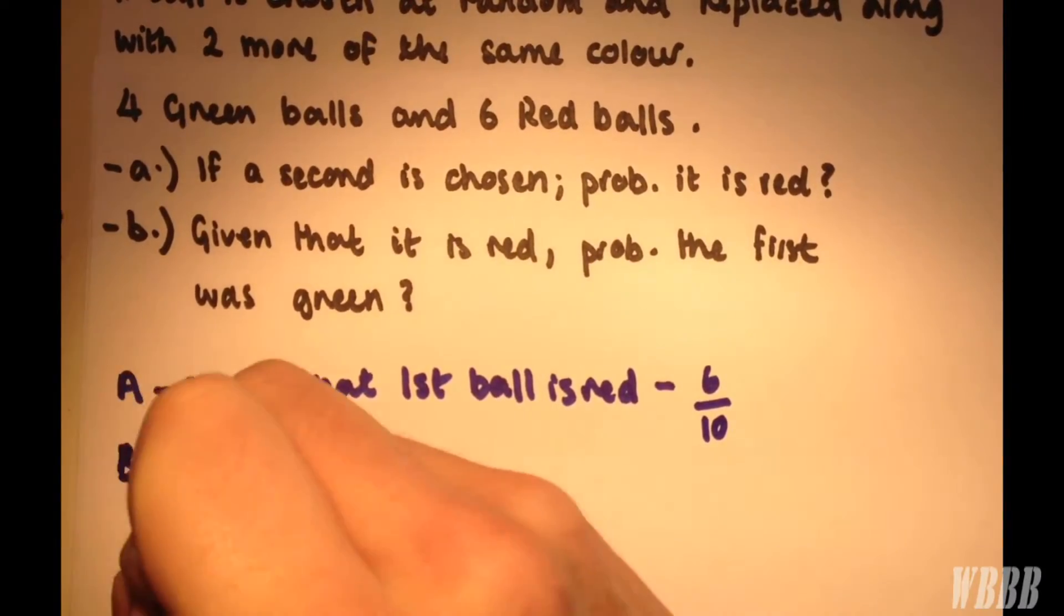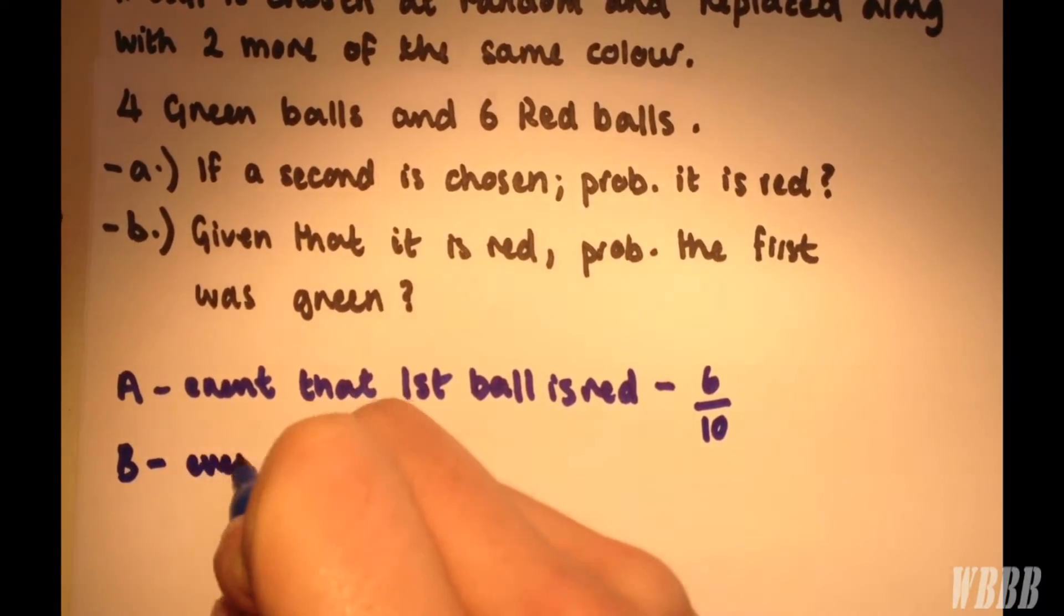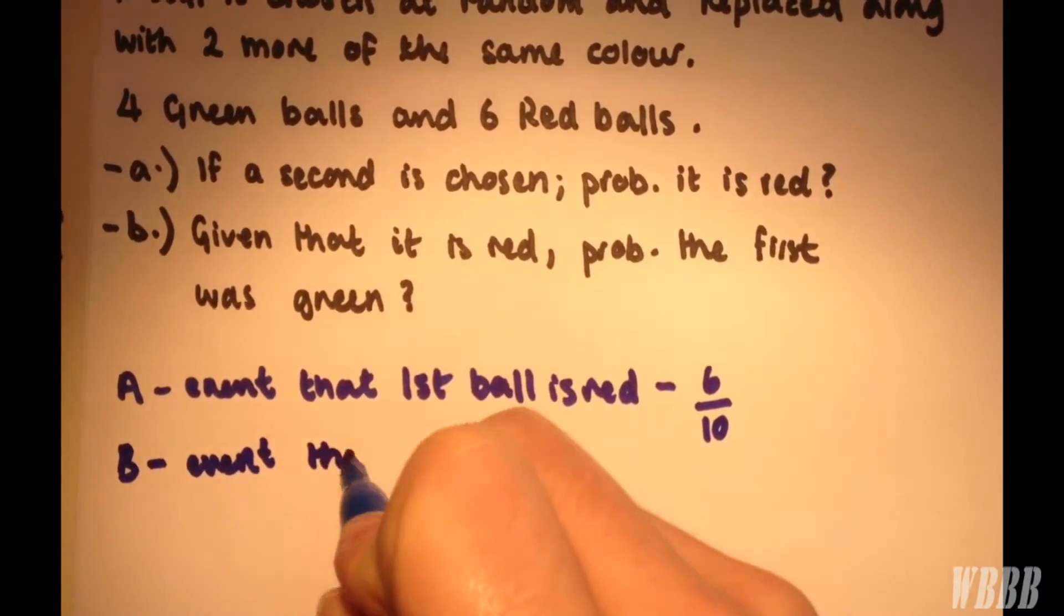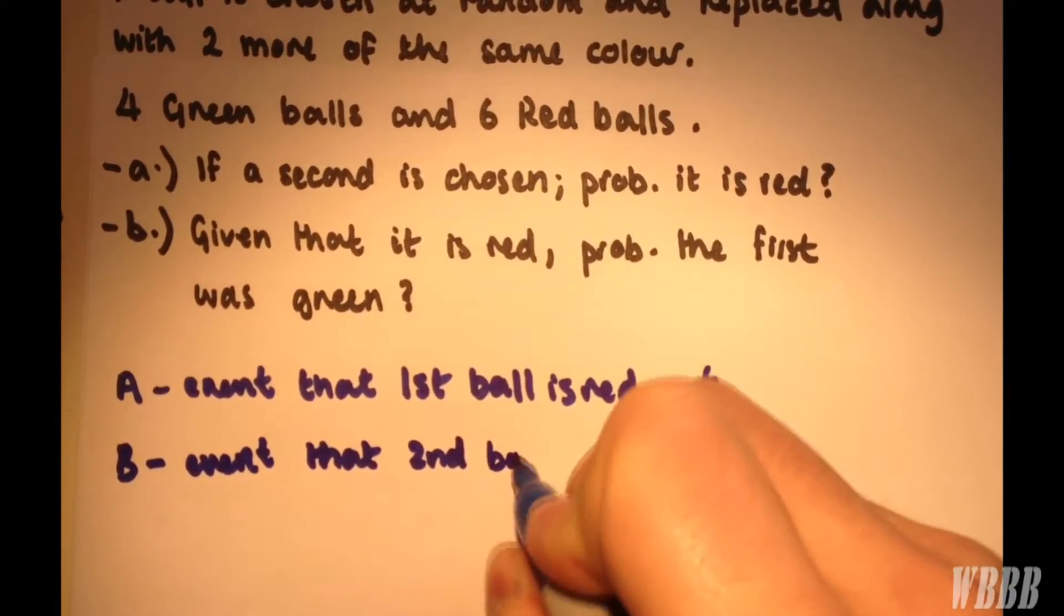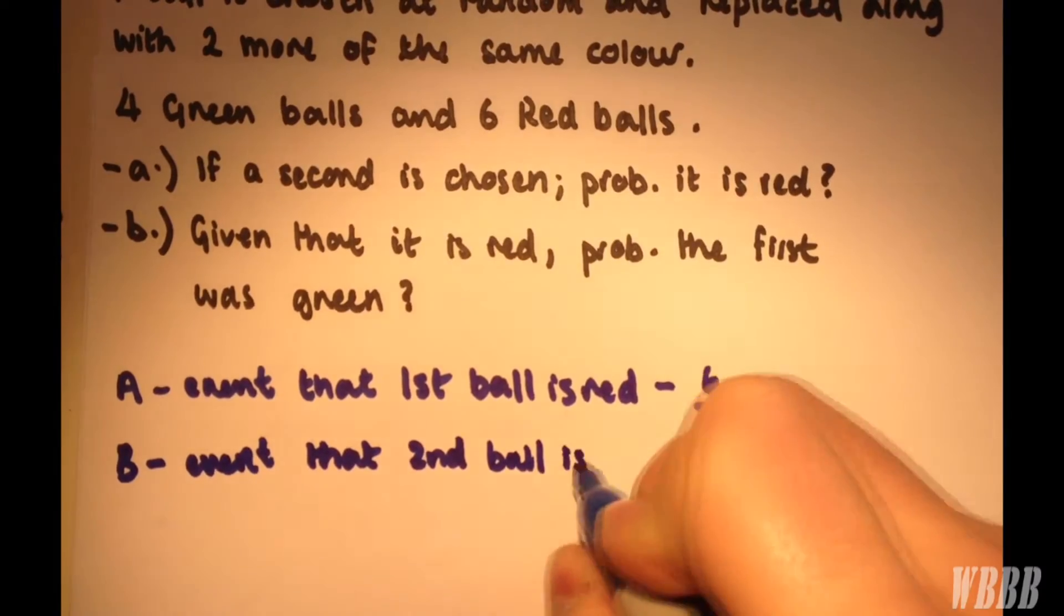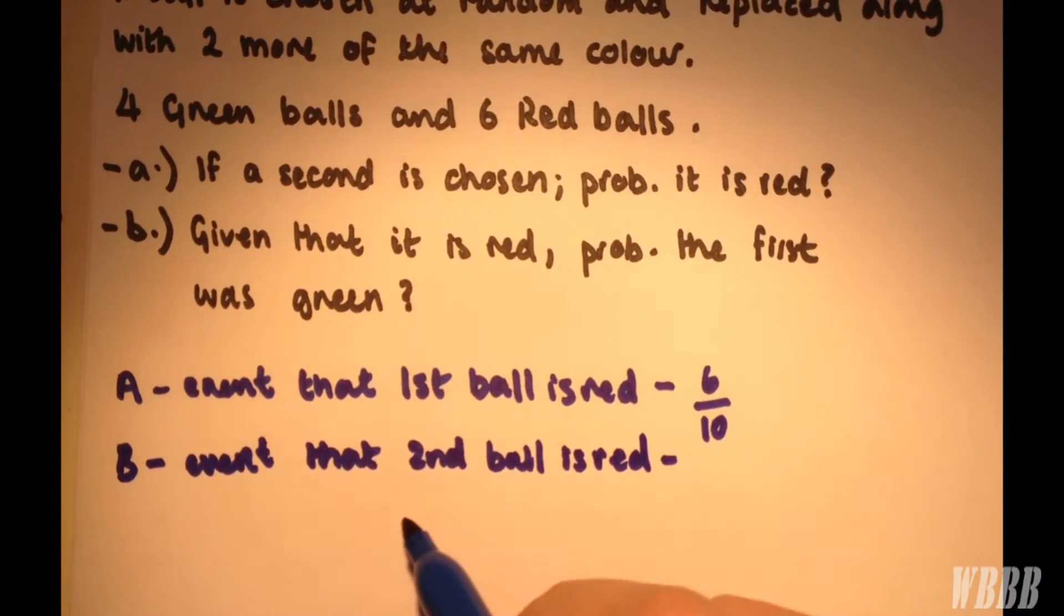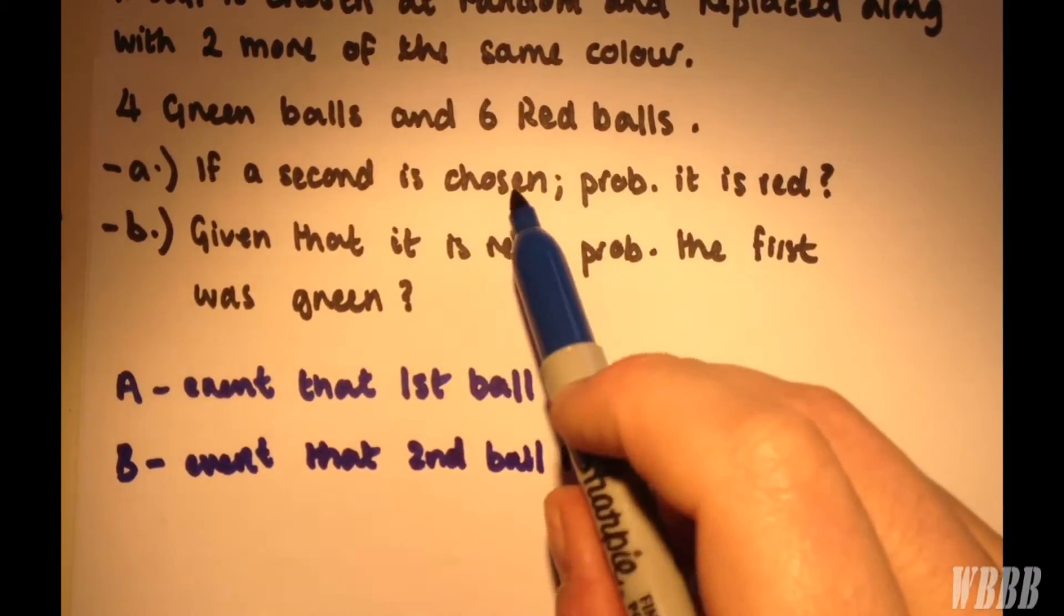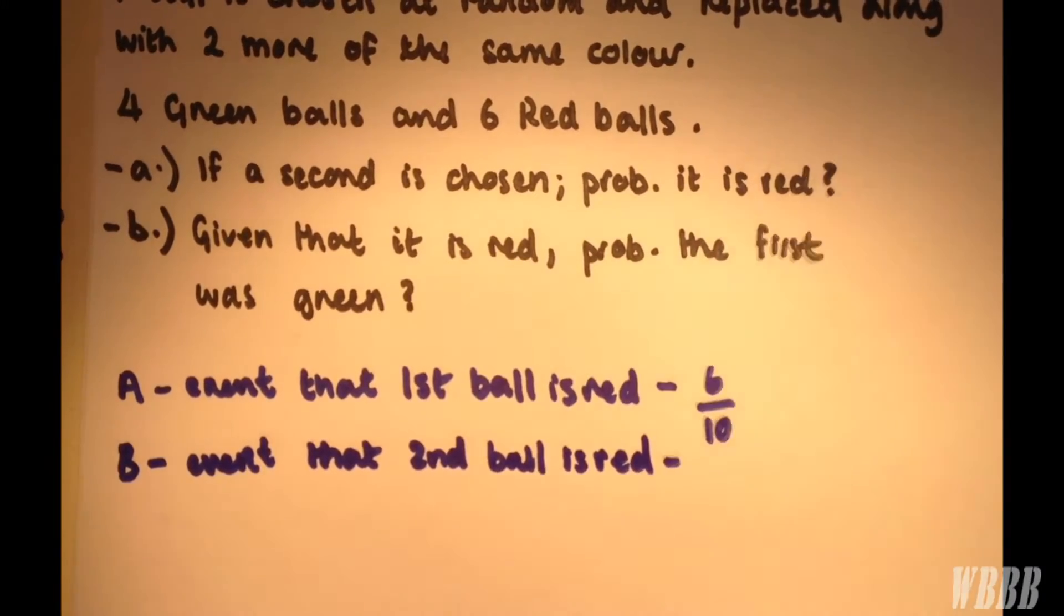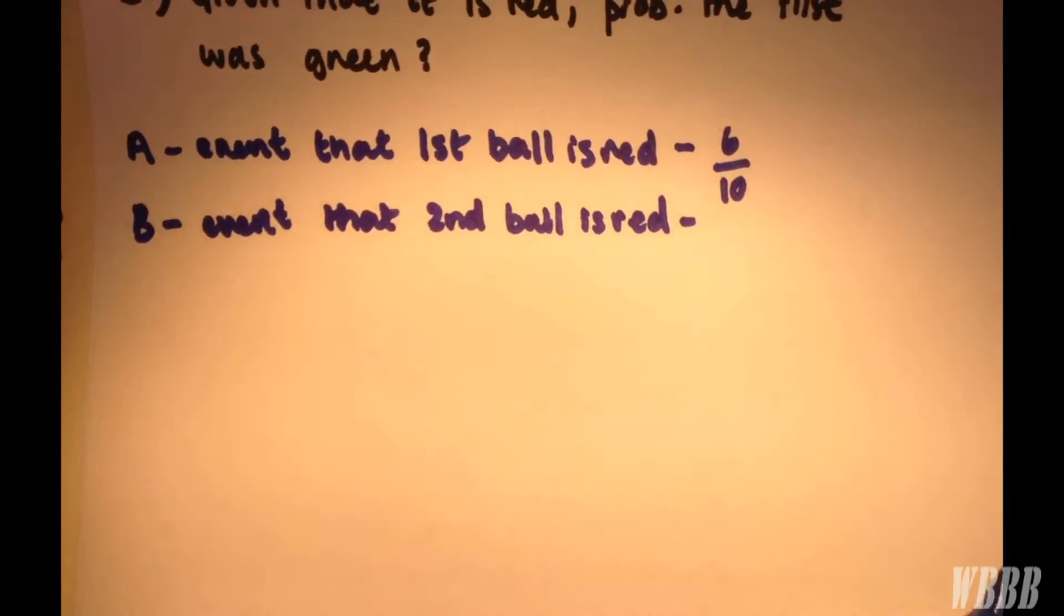Event B is what we're looking for: the second ball is red. Obviously, there are many more different ways of getting a second red ball. To answer part A, we're going to use the partition theorem, which goes as follows.